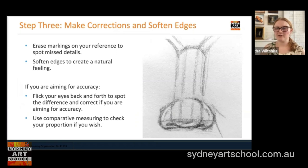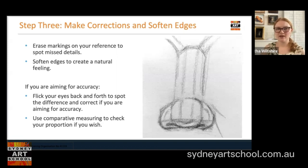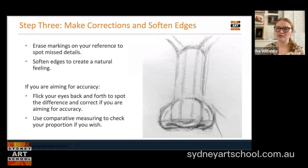Now we're going to be making our final corrections and softening our edges. At this stage I usually like to erase any markings I've drawn on my reference, or grab a fresh version of that reference that hasn't been marked up, because the markings you put in for your basic structure might cover up soft curves and subtle details you'll want to see. We're going to put in anything that's missing and soften our edges to create a natural feeling, so we don't have a remaining robot nose. If you're aiming for accuracy, flick your eyes back and forth to spot the difference between your drawing and your reference, and use comparative measuring on any last little areas you're unsure about.